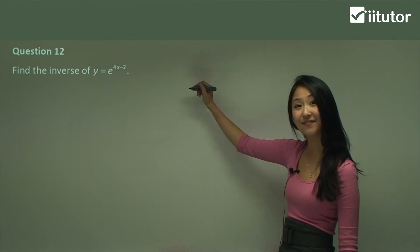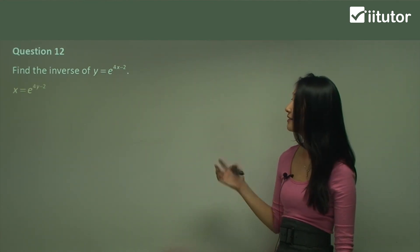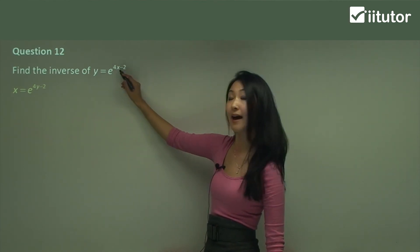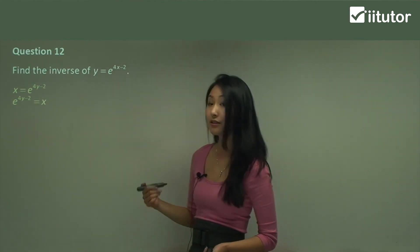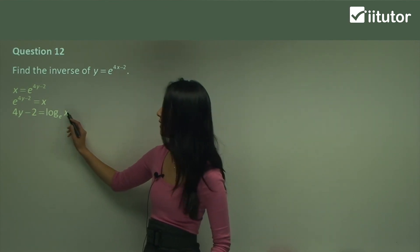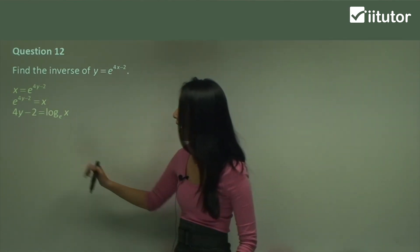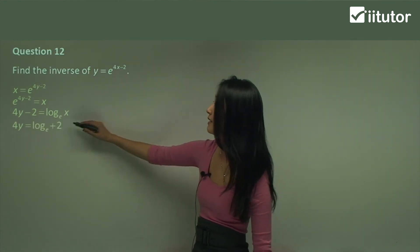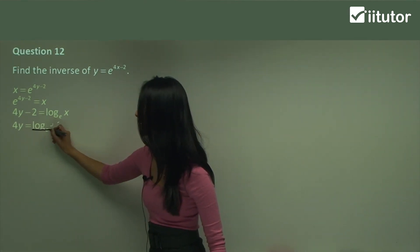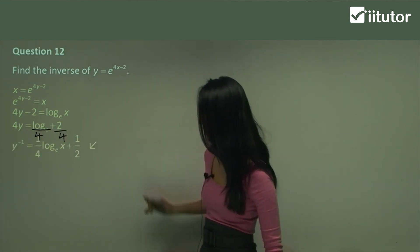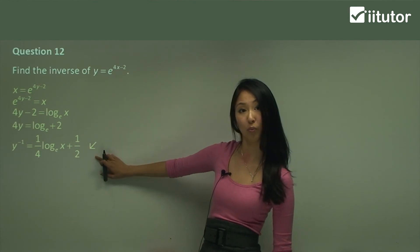In question 12, let's find the inverse of y equals e to the power of 4x minus 2. Switching x and y, we have x equals e to the power of 4y minus 2. Using the log rule, we get log base e of x equals 4y minus 2. We move the 2 over so it becomes plus 2, then divide everything by 4, giving us y equals one quarter log base e of x plus one half.